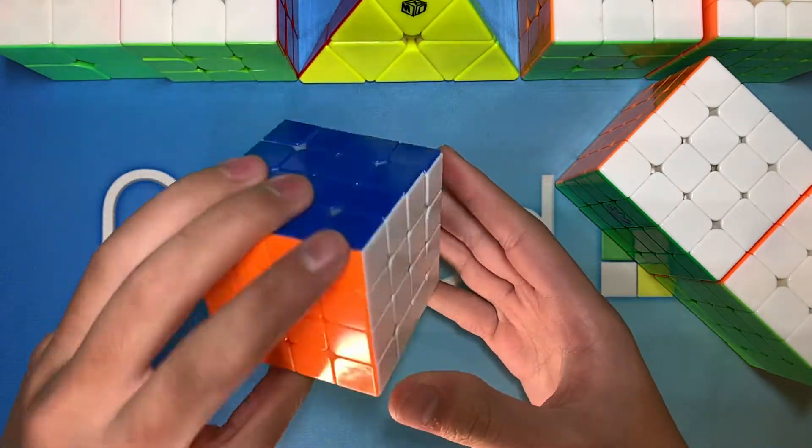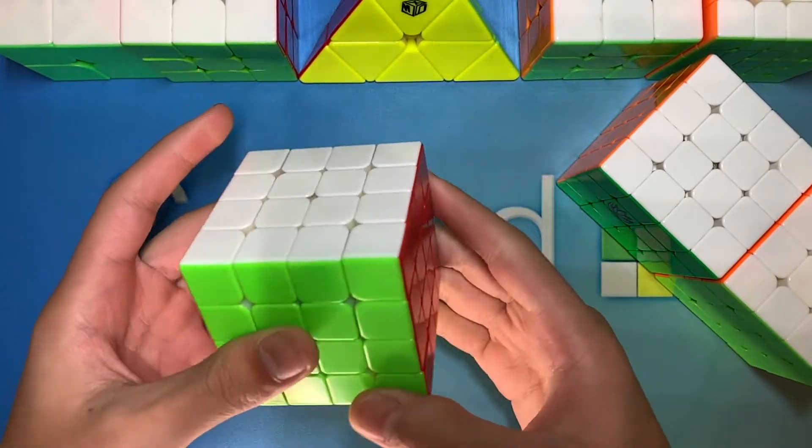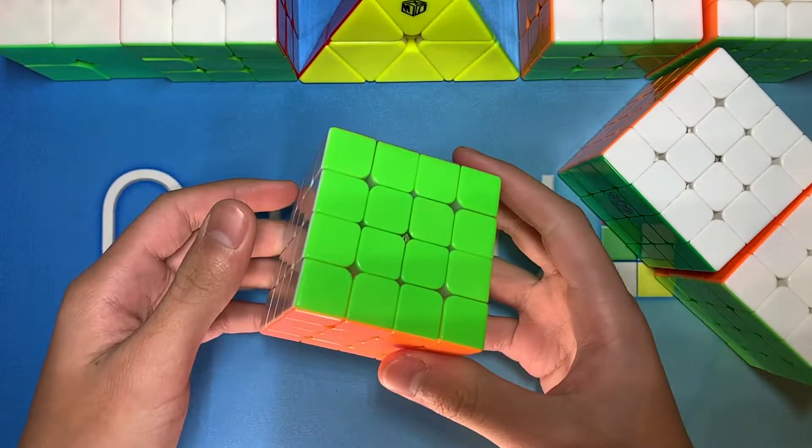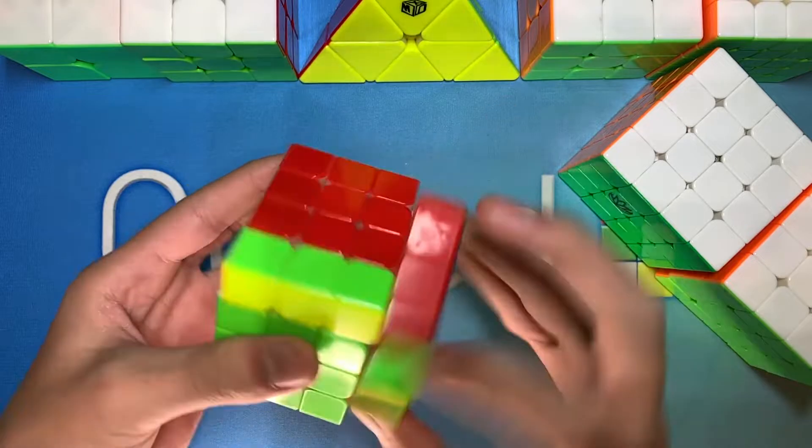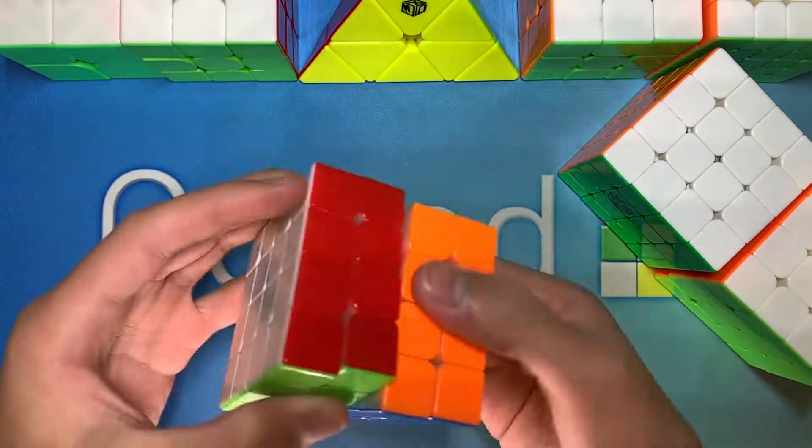The reason I probably won't be using the Valk 4M is that the inner layer magnets feel a lot stronger than I would actually like to have during my solves. The outer layers on this cube are actually amazing, but these super strong inner layer magnets just hindered the flow of my solving more than I would like.